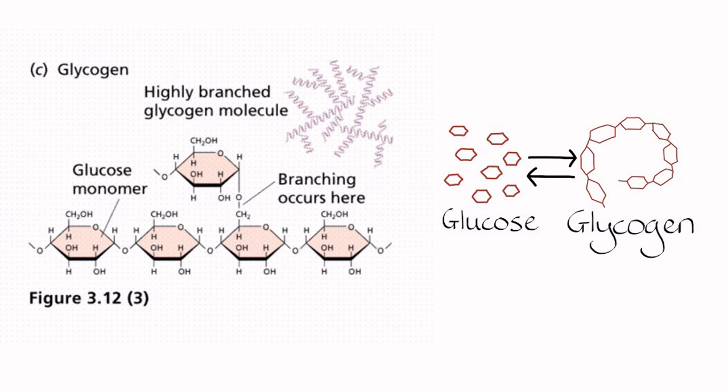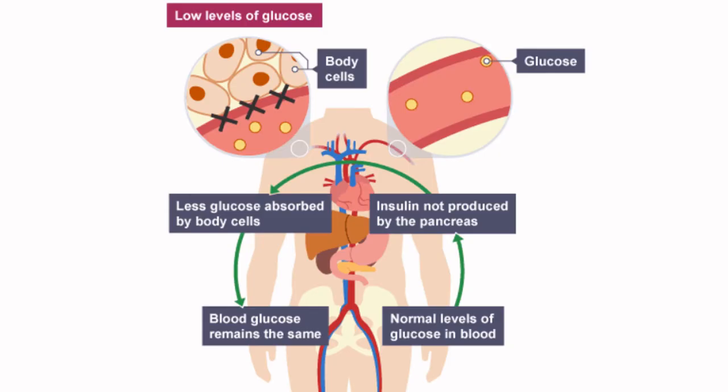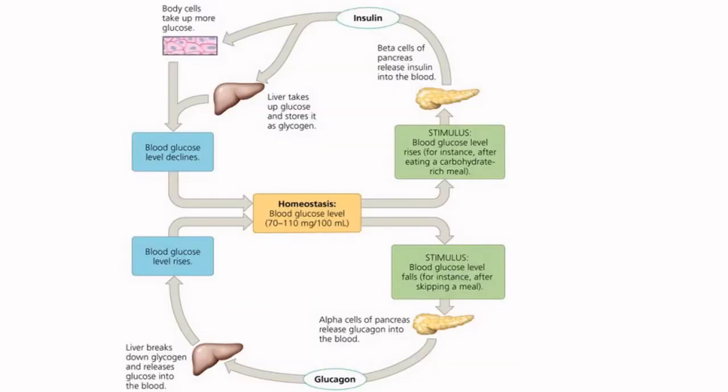What happens if you decide to fast or do some very strenuous exercise? In these conditions your blood glucose levels drop. The pancreas stops secreting insulin and starts producing a hormone called glucagon. Glucagon causes the breakdown of glycogen in the liver and muscles — it snaps all those glucose molecules apart and puts that sugar back into your blood, so glucose levels start to rise. Insulin and glucagon are said to be antagonistic hormones.